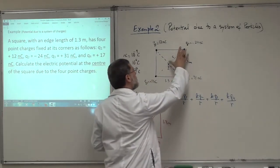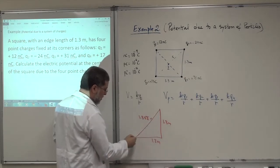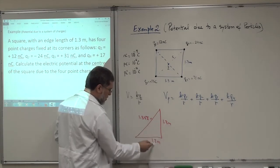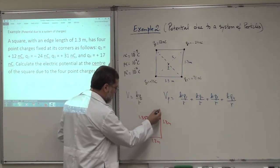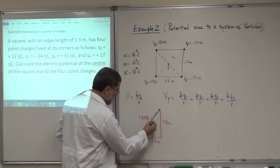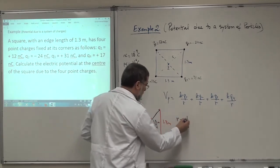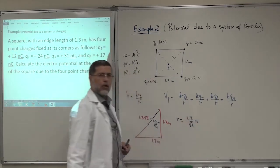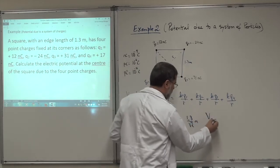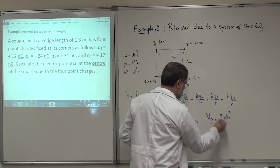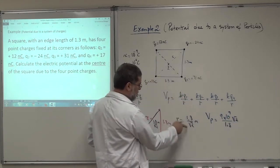Let's calculate R, which is half the diagonal. Using Pythagoras, with sides 1.3 meters each, the full diagonal is 1.3 times the square root of 2 meters. Half of that is 1.3 over the square root of 2 meters. So R in this problem is 1.3 divided by the square root of 2 meters.